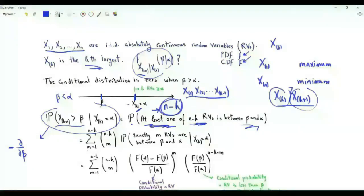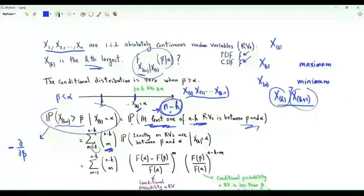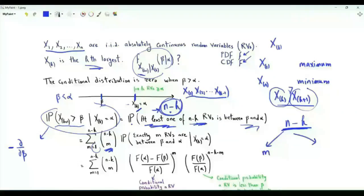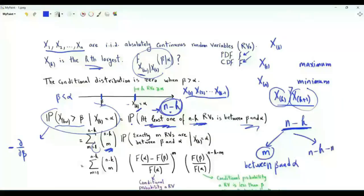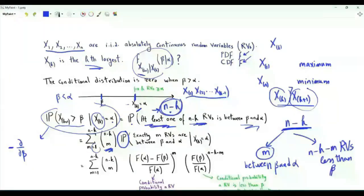This probability is a sum: we take small m from 1 to N minus k. From the N minus k random variables, we choose m (where m is at least 1), giving the binomial coefficient N minus k choose m. Those m chosen random variables take values between beta and alpha. The remaining N minus k minus m random variables are less than beta. This is computed as a conditional probability given that the k-th largest random variable equals alpha.